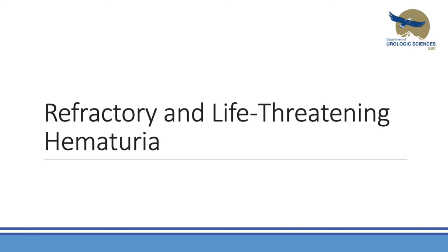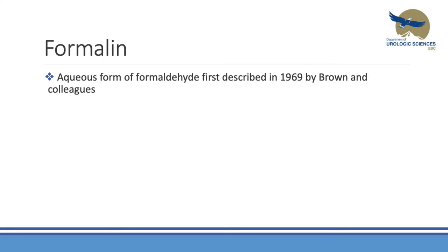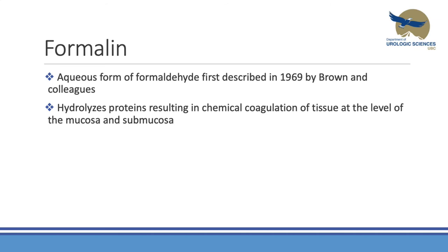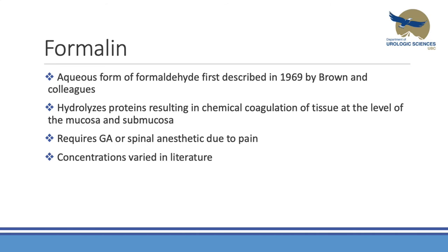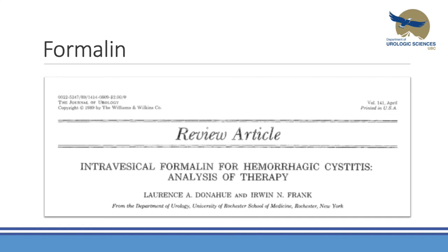For refractory and life-threatening hematuria, formalin instillation is an option. Formalin is an aqueous form of formaldehyde first described in 1969 by Brown and colleagues, used on patients with inoperable bladder cancer at 10% concentration with a 90% success rate. It hydrolyzes proteins, resulting in chemical coagulation of the mucosa and submucosa. General anesthesia or spinal is required because it can be quite painful. Dwell time is typically 12–15 minutes. Concentrations used include 1%, 2%, 3–6%, or 10%, and a cystogram should always be performed first to rule out reflux or perforation.